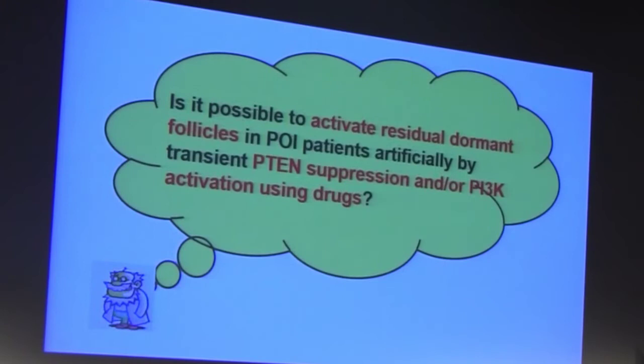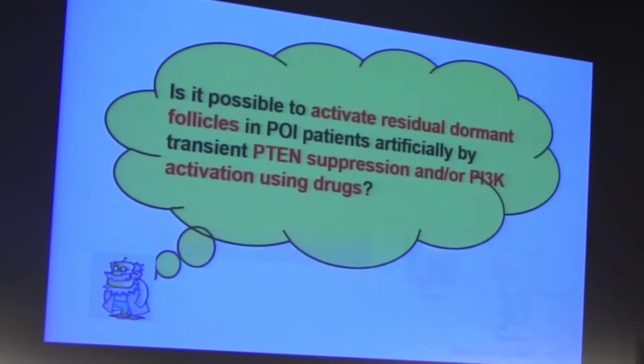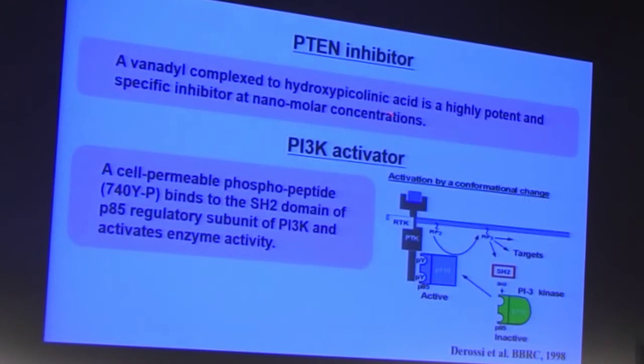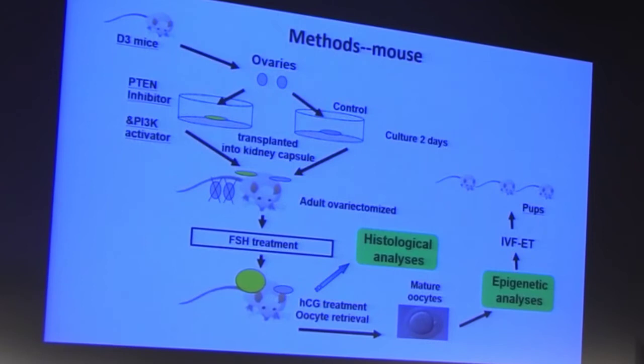Because it is very difficult to perform genetic therapy in humans, the question is: can we activate residual dormant follicles in POI patients artificially by transient PTEN suppression and/or PI3K activation using drugs? We have a PTEN inhibitor — bpV(HOpic), a highly potent and specific inhibitor at nanomolar concentration. We also have a PI3K activator, a cell-permeable phosphopeptide called 740Y-P, which binds to the SH2 domain of the p85 regulatory subunit of PI3K and activates its enzymatic activity.